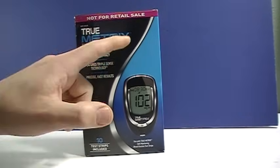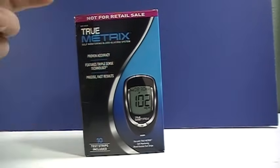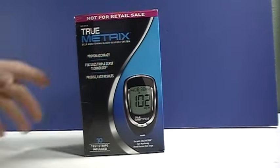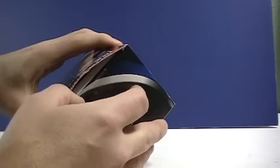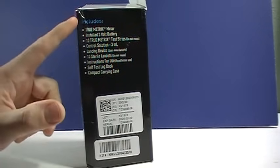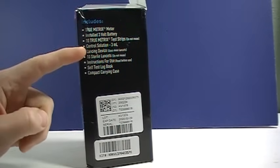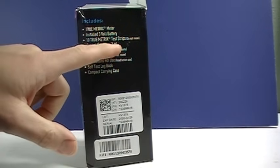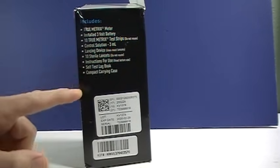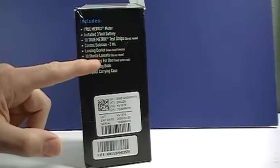Many pharmacies will sell it under their own name but it still will say True Metrics on it, one of the more affordable blood sugar machines out there. This kit includes the meter, comes with a battery installed, comes with 10 test strips to get started, control solution, the lancet device, lancets of course, instruction book and carrying case.